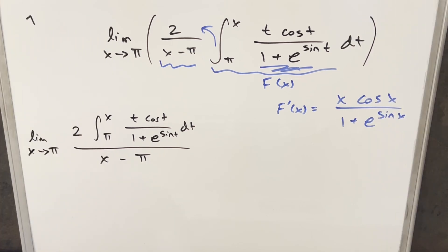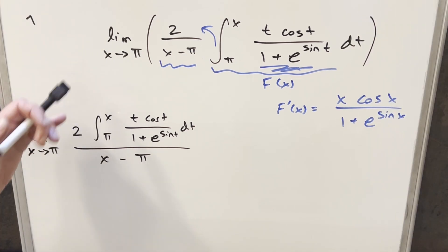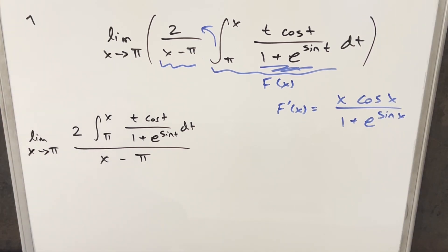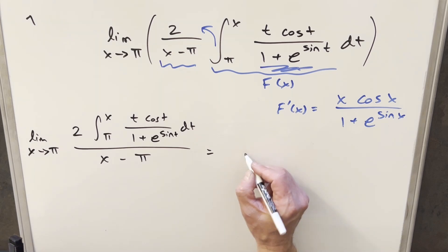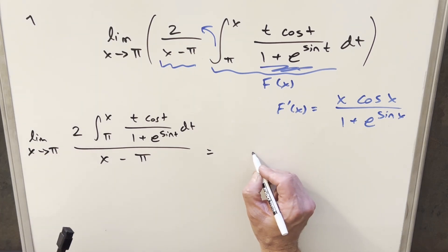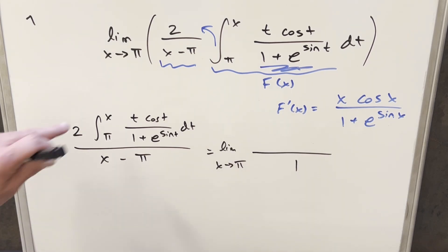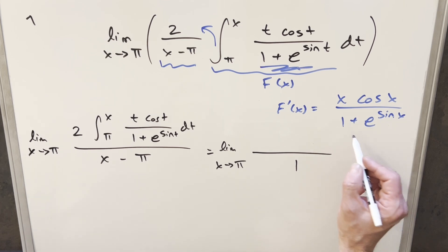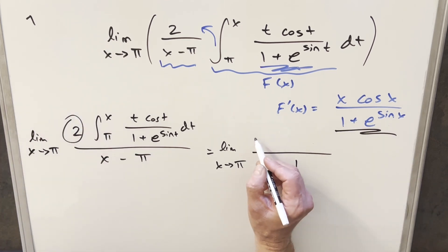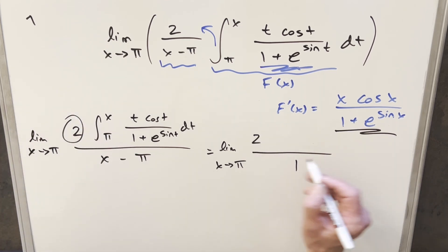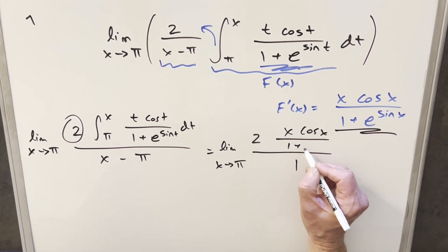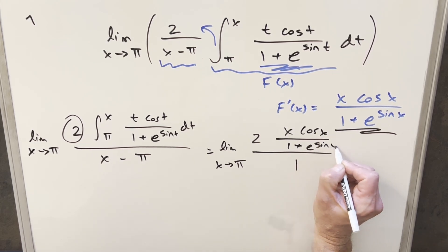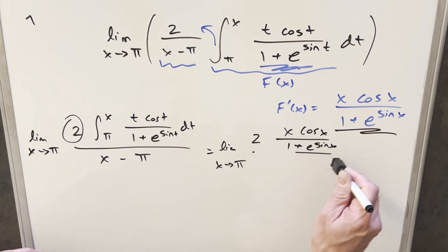Continuing with L'Hôpital's rule — we confirmed this is a 0 over 0 form — so we take the derivative of numerator and denominator. The derivative of the denominator x minus pi is just 1. The derivative of the numerator brings in the factor of 2 out front, giving us 2 times x cosine x over 1 plus e to the sine x. We can drop the 1 in front since the limit is now no longer indeterminate.